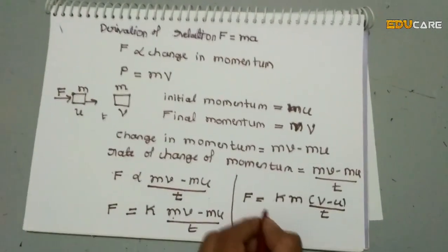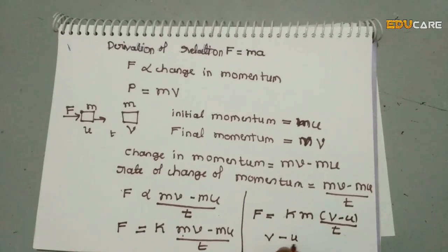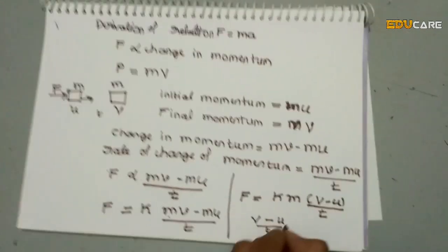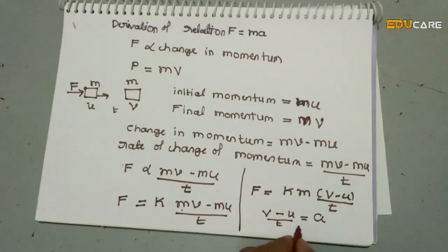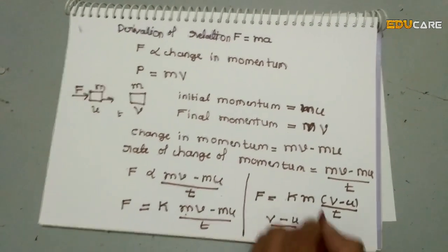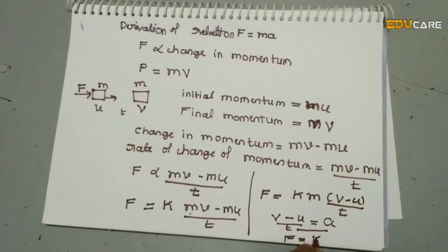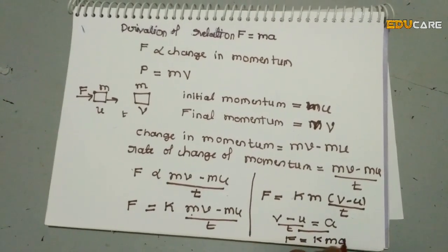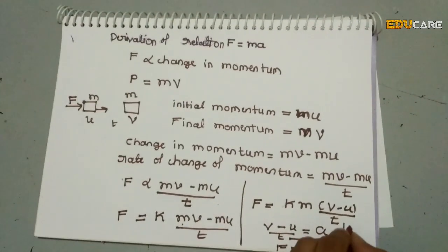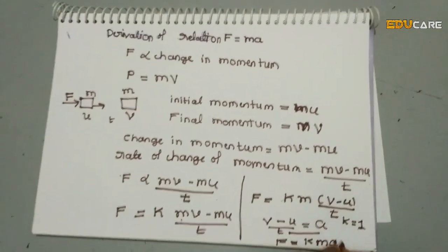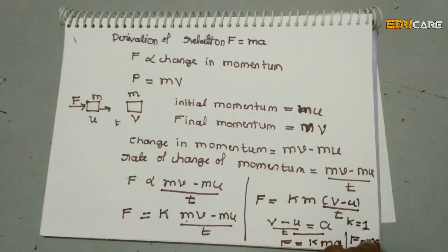We have the relation v minus u divided by t, which is equal to a (acceleration). Substituting this in the above equation, we can write f is equal to k into m into a. Now, if we put k equal to 1, then the equation becomes f is equal to m into a.